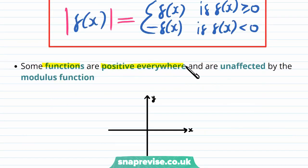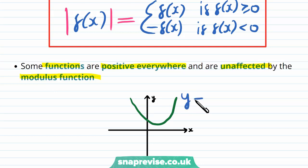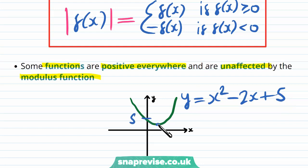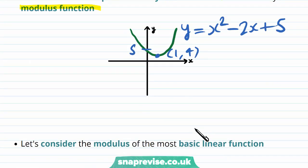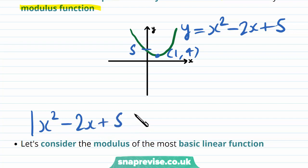Now some functions are positive everywhere and are hence unaffected by the modulus function. Take for example the quadratic y equals x squared minus 2x plus 5. It has a y-intercept at 5 and a turning point at (1, 4). Because this function is positive everywhere, if we took the modulus the graph would look the same. So in this case the modulus of x squared minus 2x plus 5 is precisely the same as x squared minus 2x plus 5.